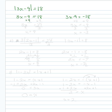We can add 9 to both sides, and we get 3x equals 27. Dividing by 3, one answer we get is x equals 9.